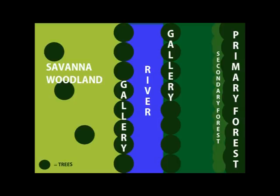Some primates can adapt to different habitat types, for example rhesus macaques. Others are only able to survive in their preferred habitat type, such as the pygmy marmoset. This means that if humans were to destroy all pygmy marmoset habitat, even if the forest habitat type still existed, pygmy marmosets would not be able to survive.